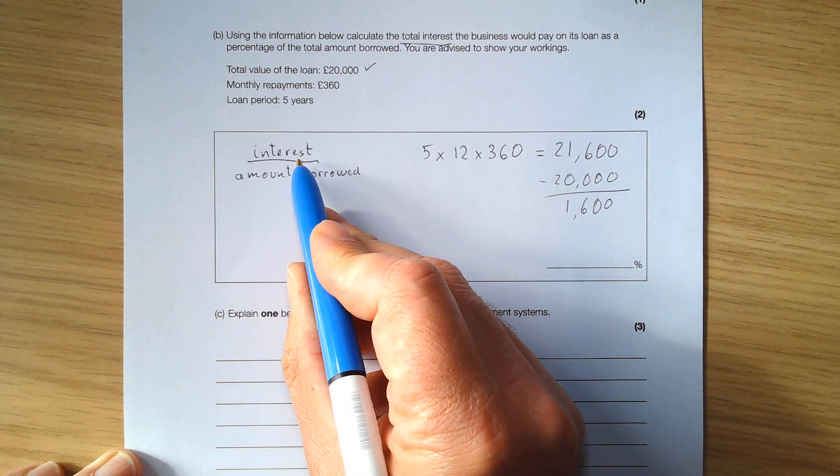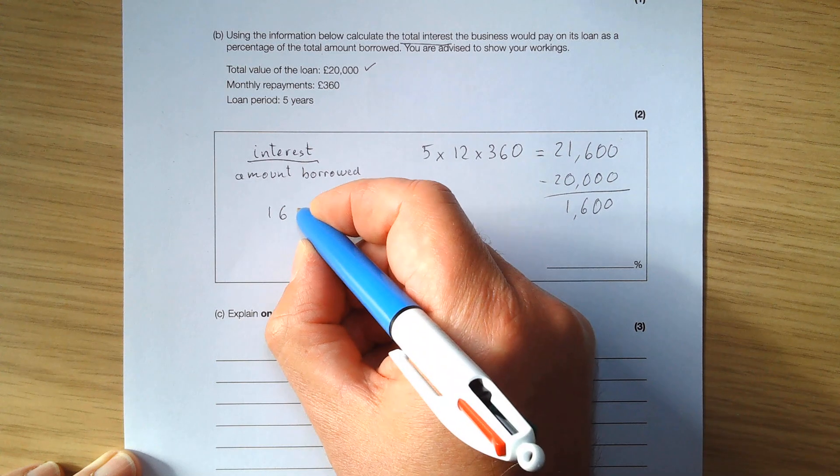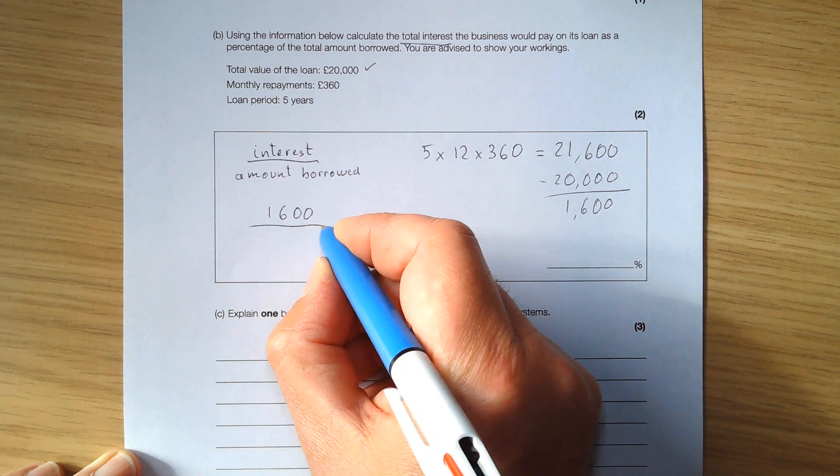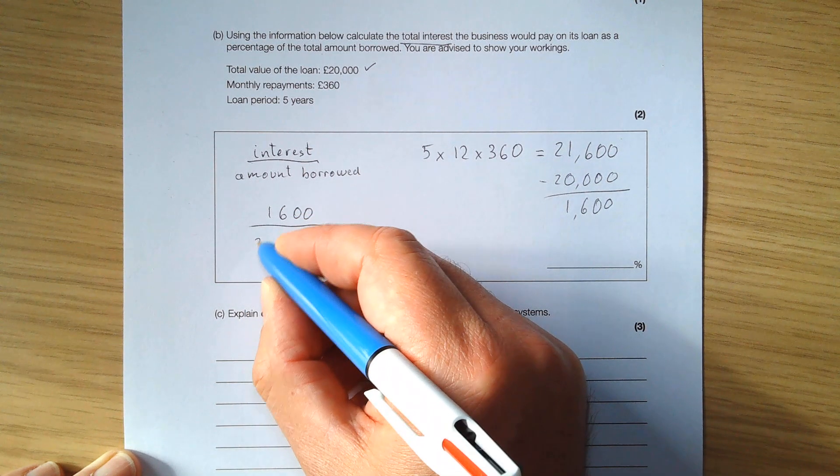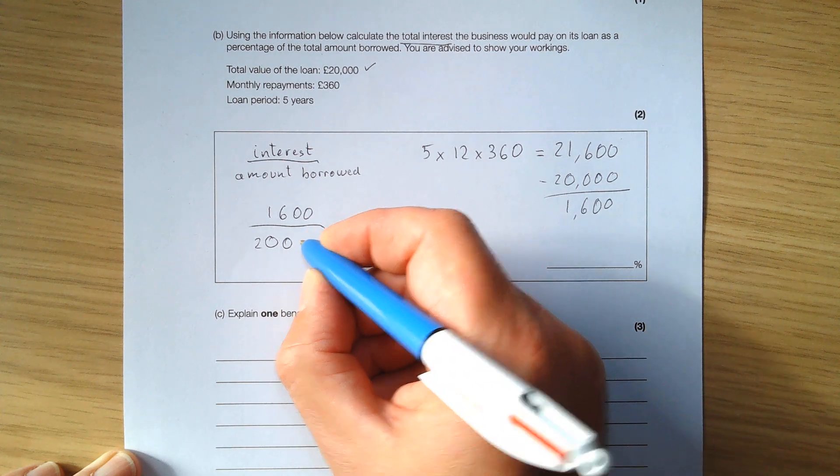So the number you want, £1,600, divided by the amount borrowed, which was £20,000.